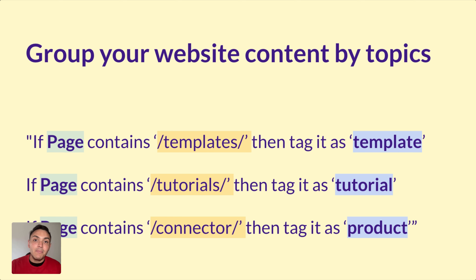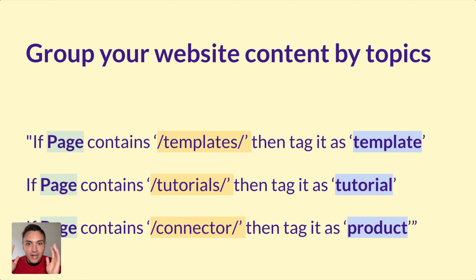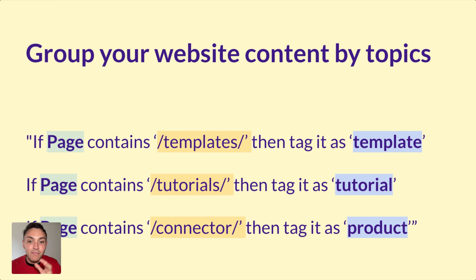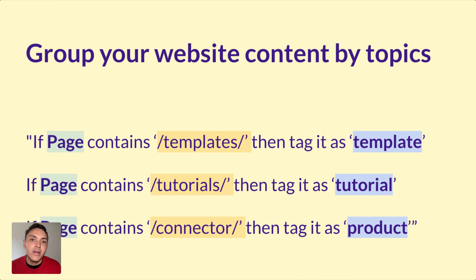Another example for grouping website data: if the page URL contains 'templates', tag it as templates; if it contains 'tutorials', tag it as tutorials; if it contains 'connectors', tag it as connectors. This way, at Porter, we group our content and can see what topic or content categories are performing best in terms of generating traffic to our website.